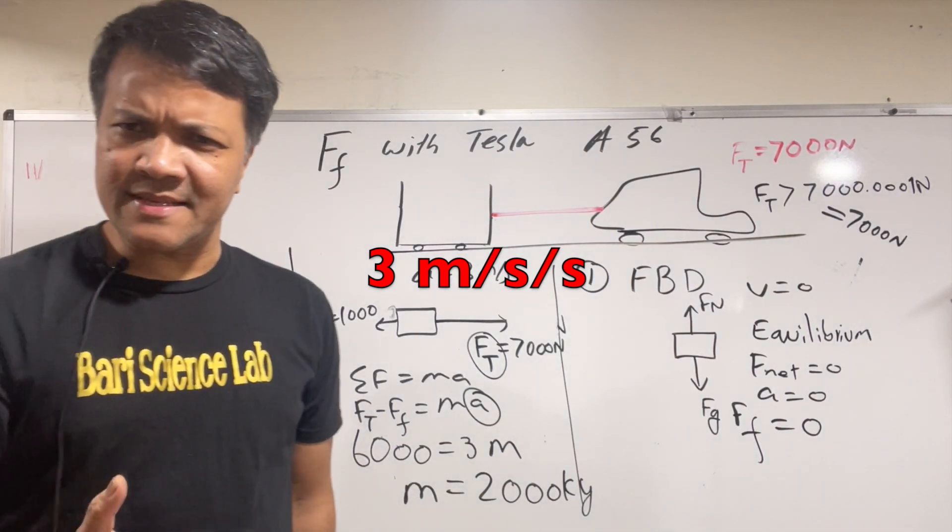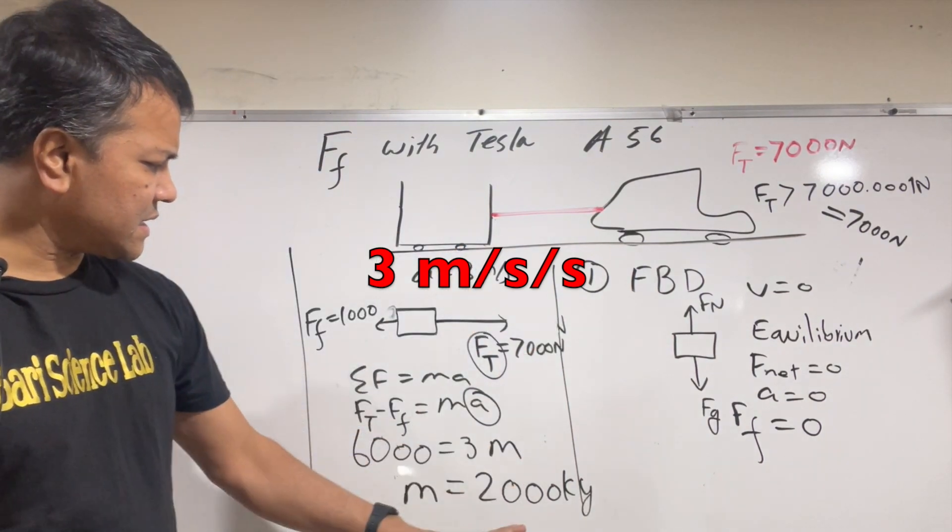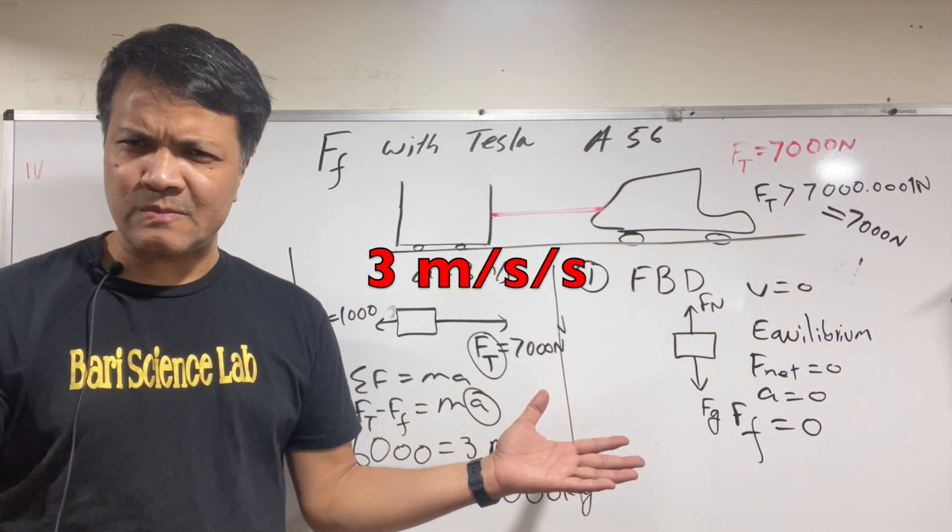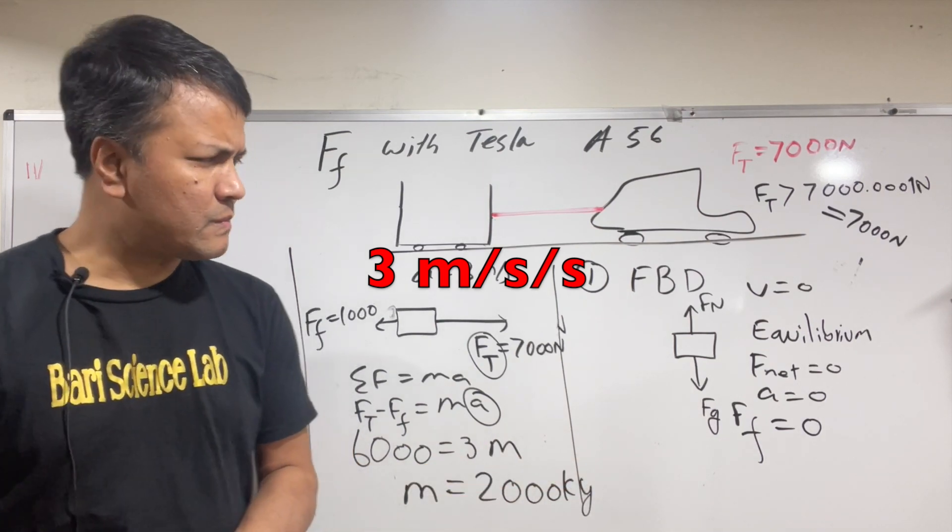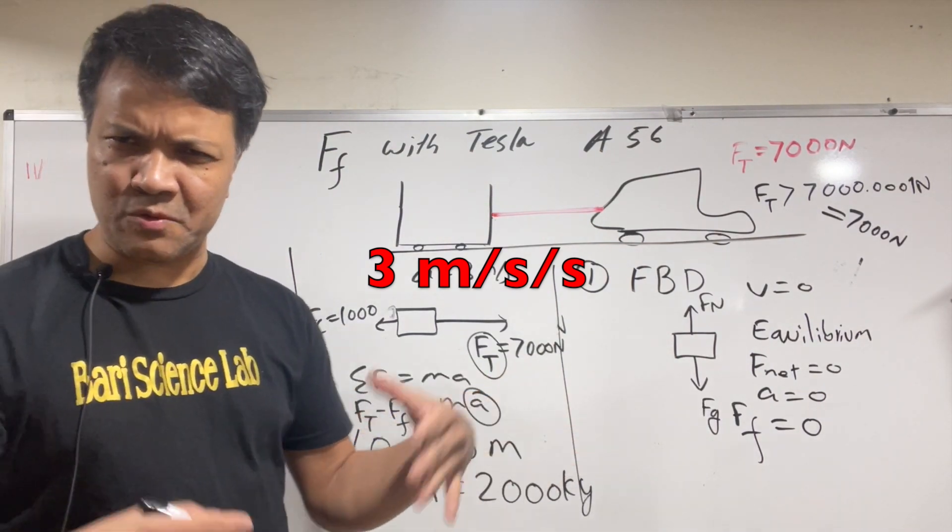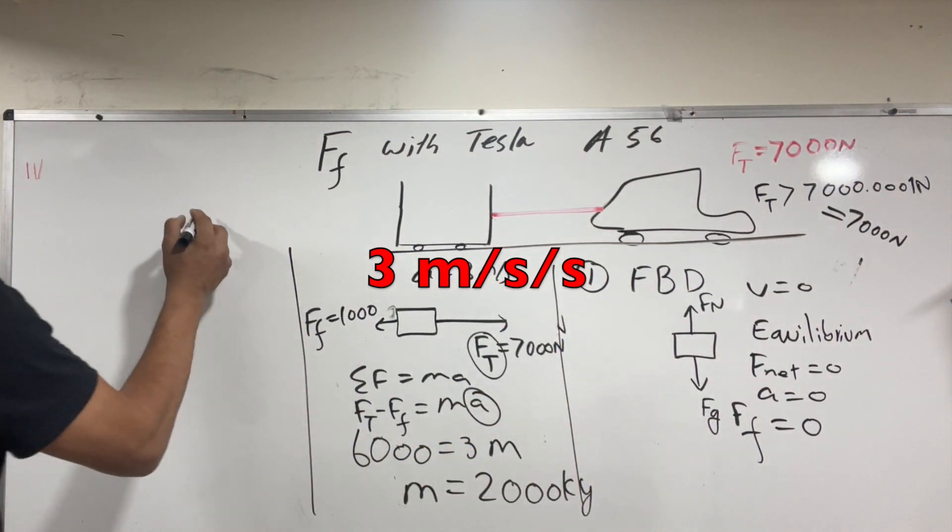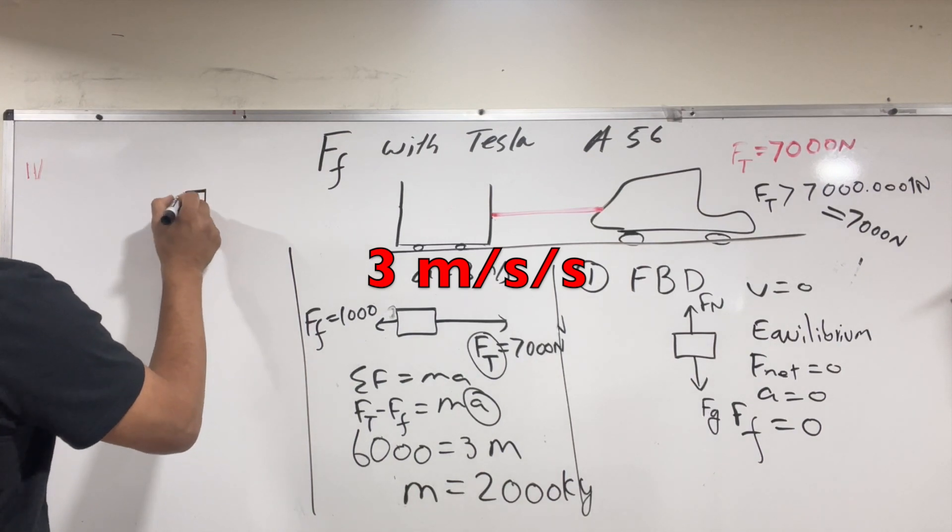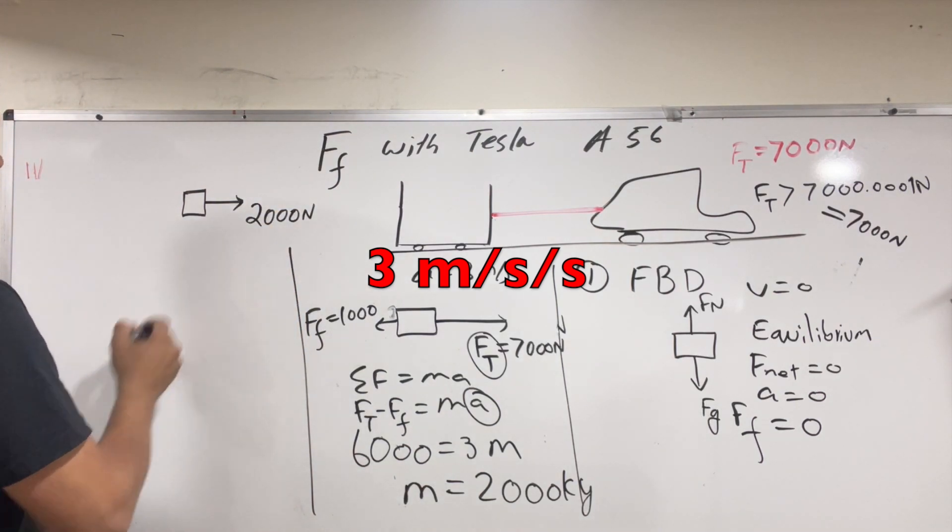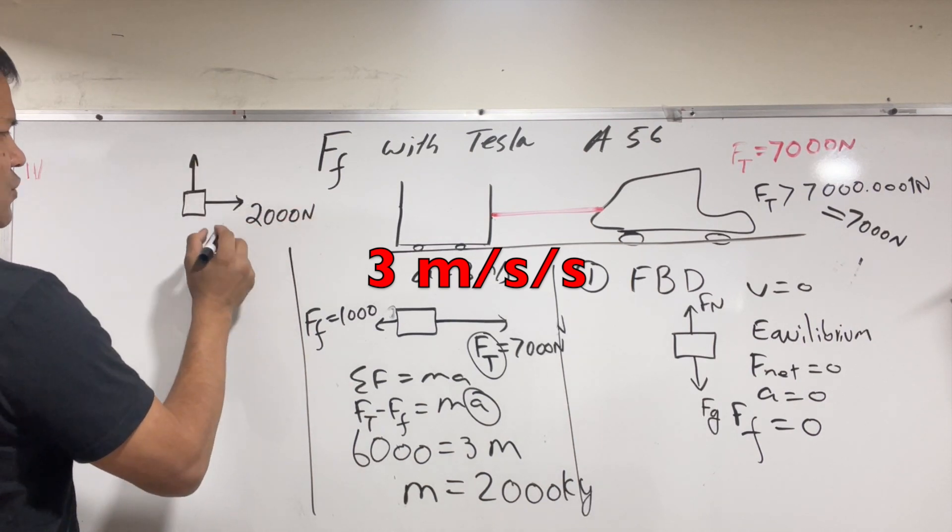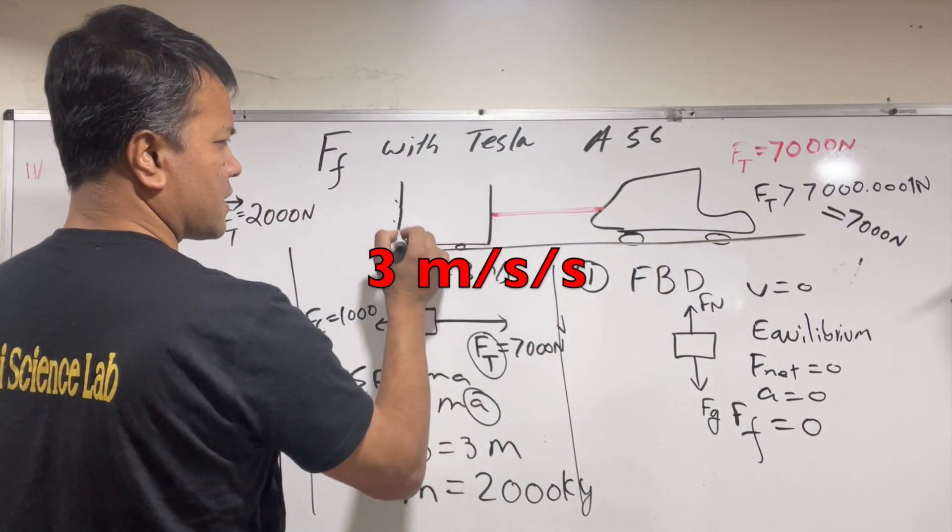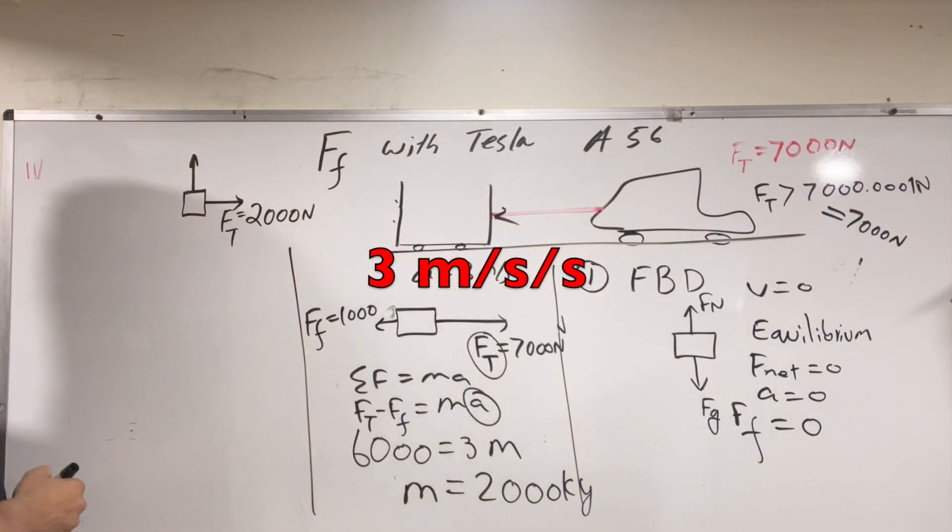Next, so Mr. Barry now learns his lesson because it takes about this much to break the rope. So he's gonna be slowly accelerating, that means he's gonna be applying much less than 7000, so the rope never breaks. Let's say he applies only 2000 newtons. This is the force he applies, tension force, because he's pulling the car.